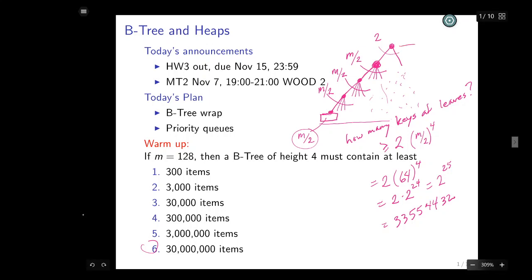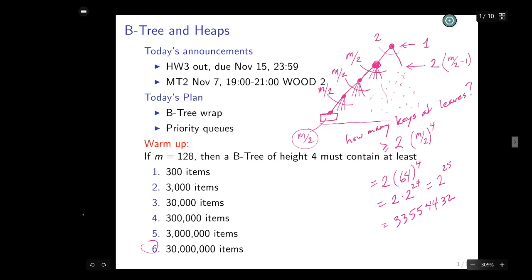We haven't even counted the keys in the internal nodes. How many keys are in the root node? One. How many are in the next level? It's 2×(M/2 − 1). The level after that has 2×(M/2) nodes, each containing M/2 − 1 keys. You can see the pattern: something like 2×(M/2)^2×(M/2 − 1), then 2×(M/2)^3×(M/2 − 1). We're still getting many keys just in the internal nodes, but I don't even need those to know the answer is six.